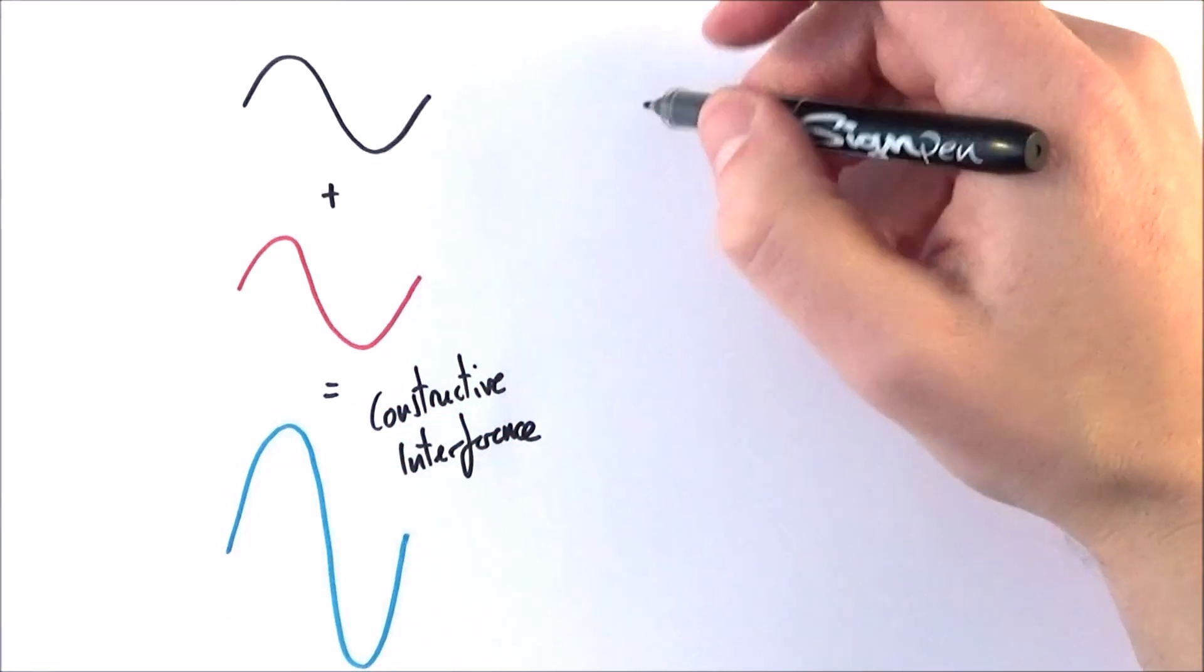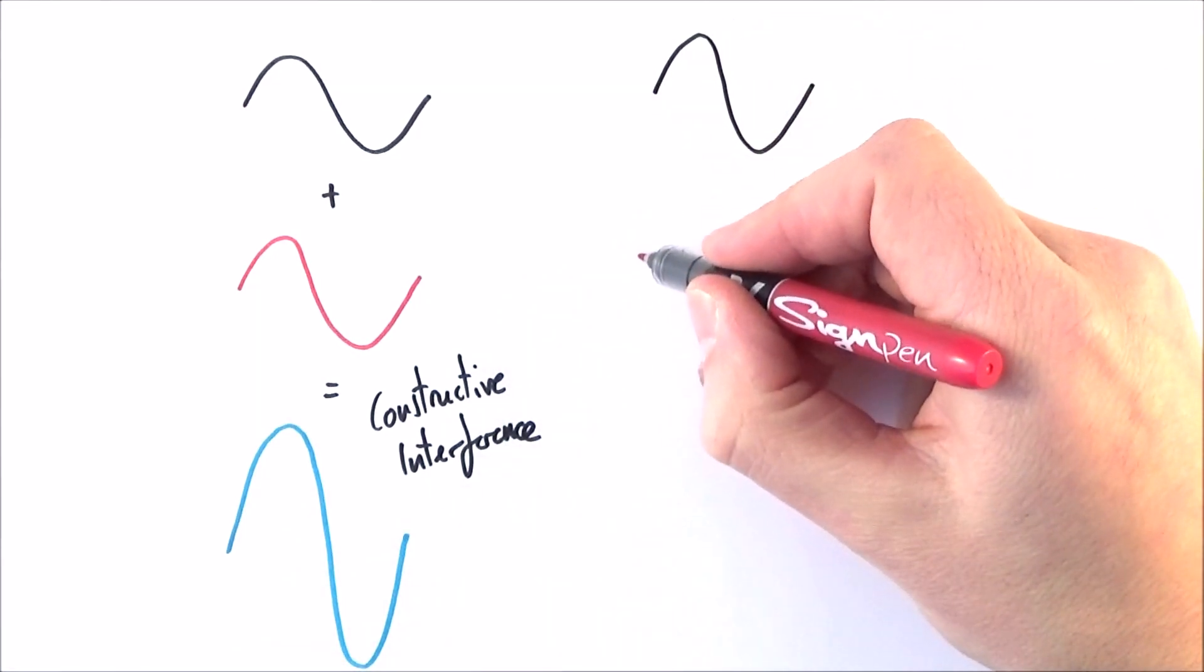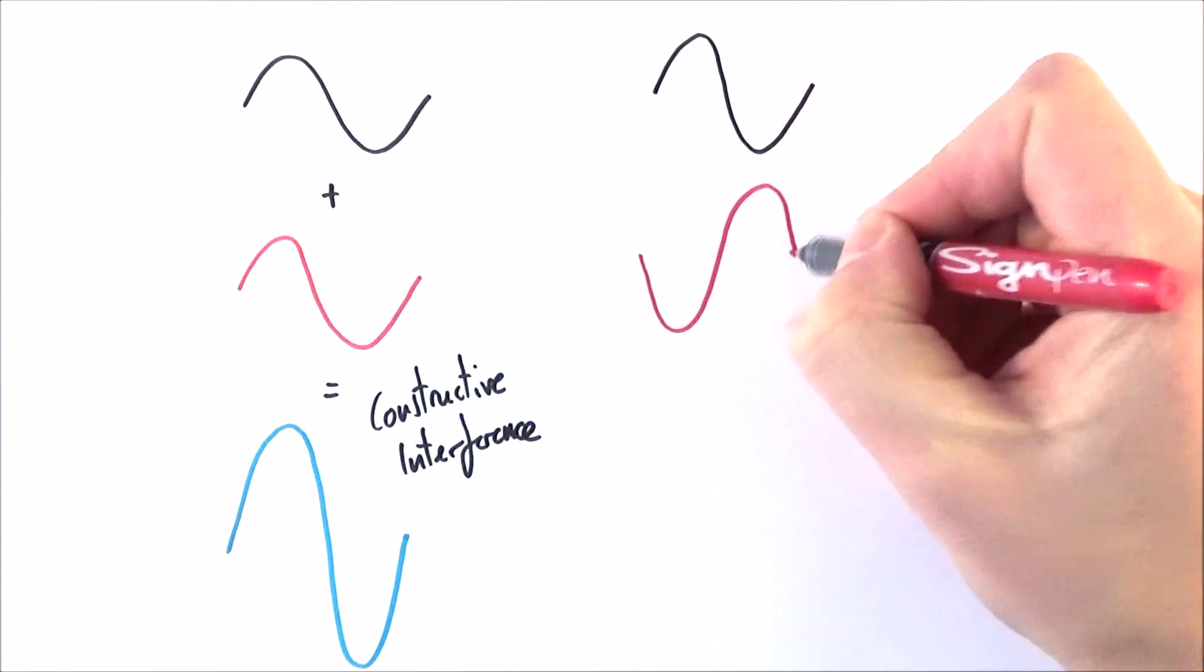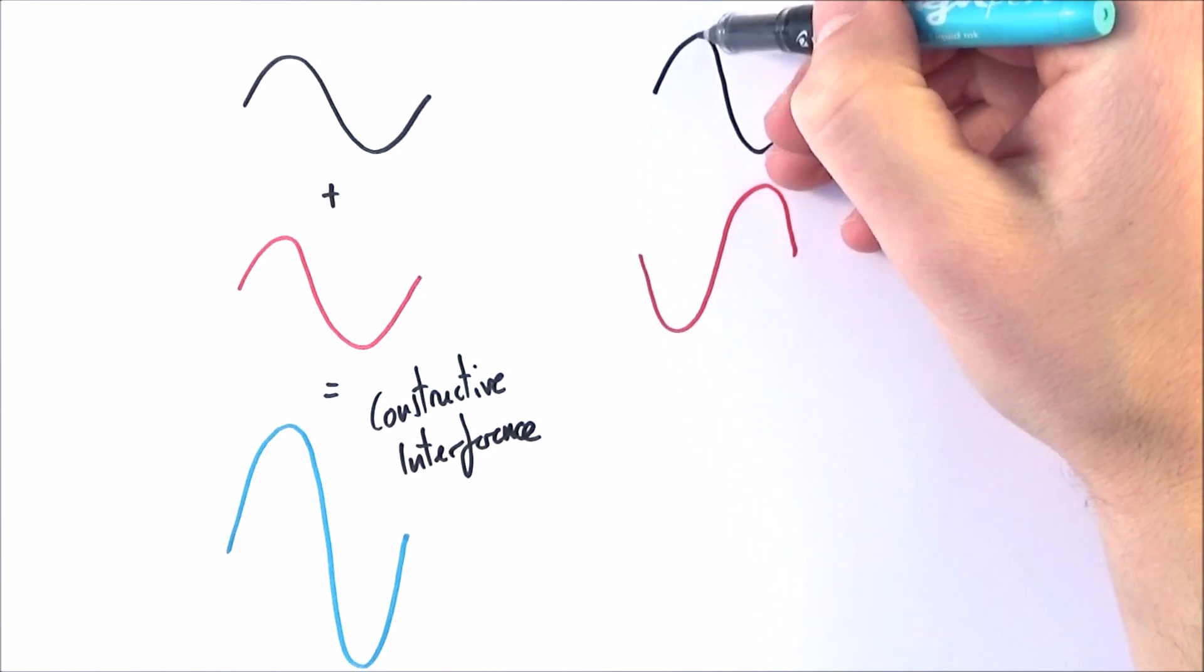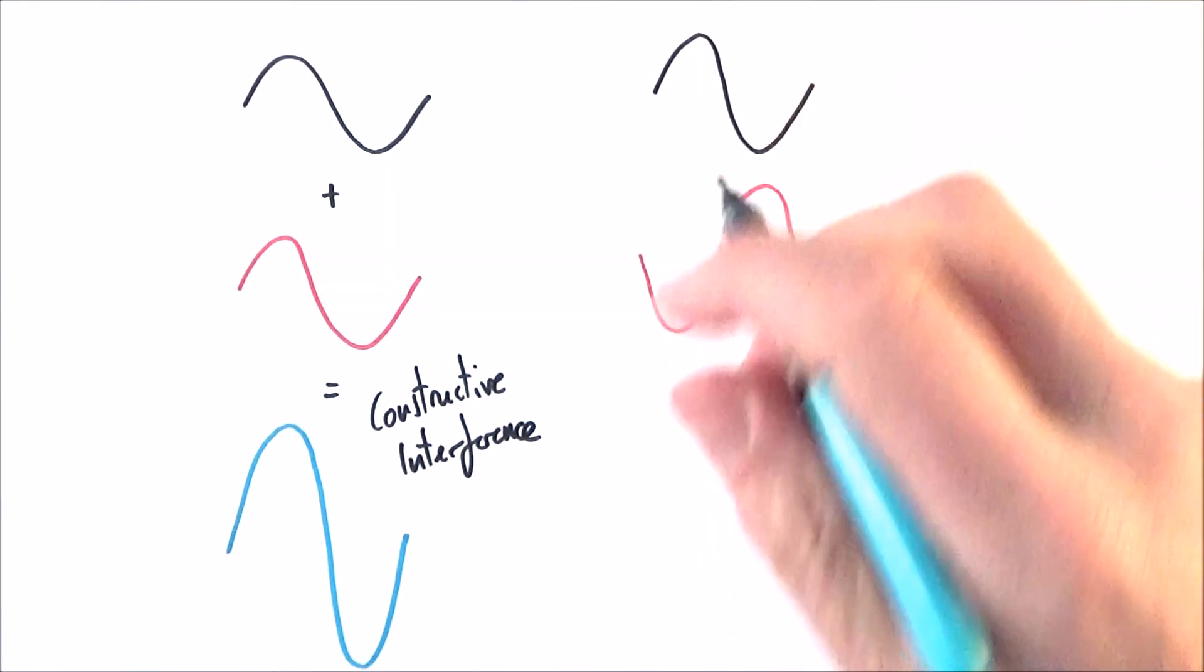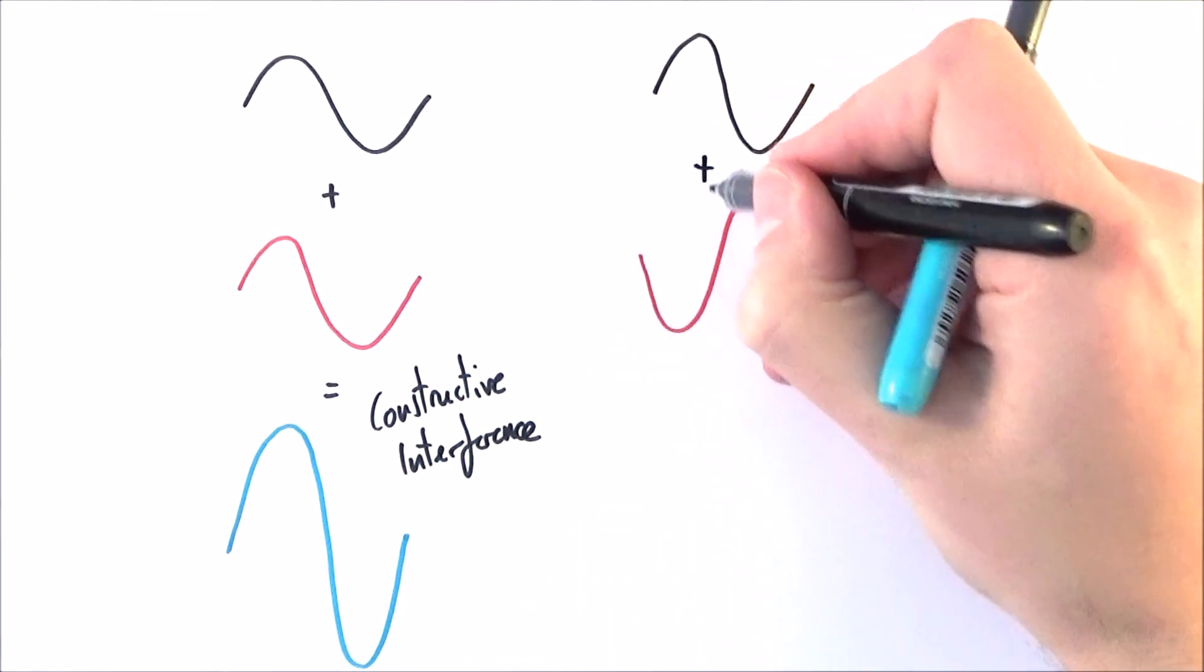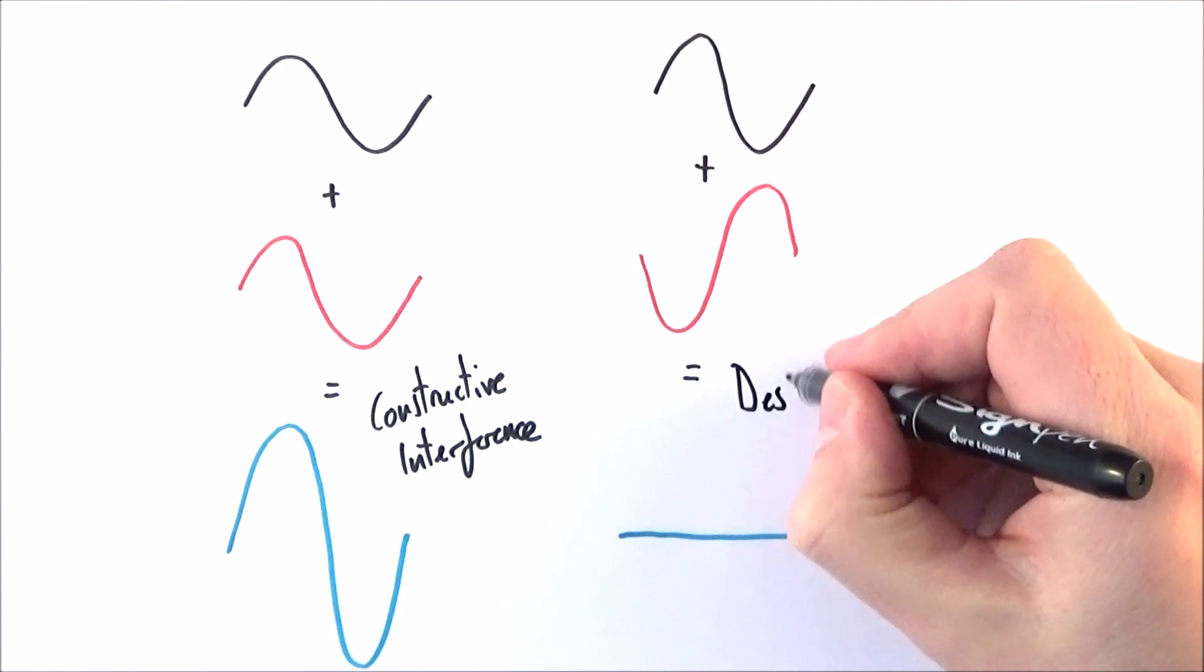We can also look at the example where we have a similar wave to begin with, and this time the second wave is 180 degrees out of phase. So that means whenever this is at its maximum positive amplitude, this is at its maximum negative displacement. And again, if we look at summing up these two waves together, what we get is something that looks like this. The two waves have cancelled each other out, and this is what we call destructive interference.